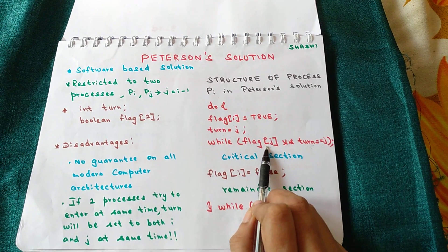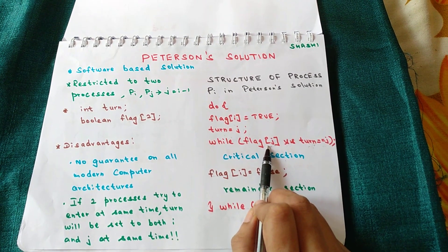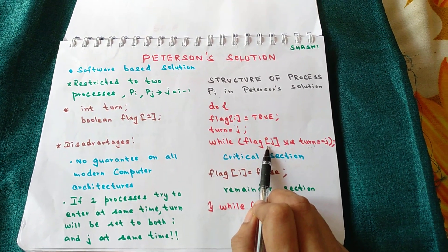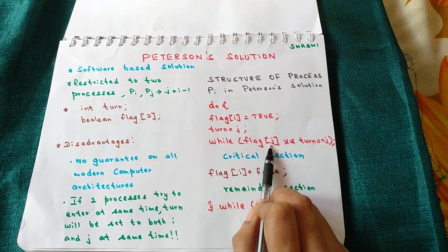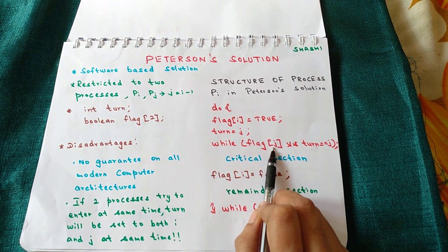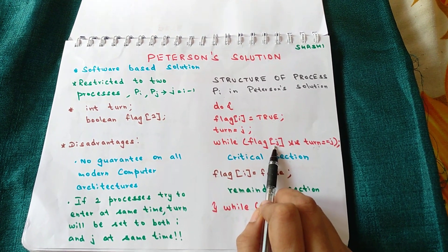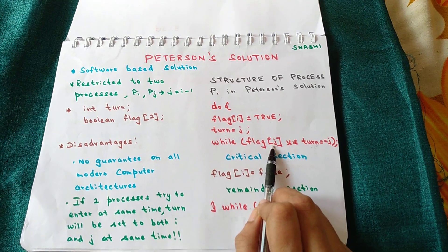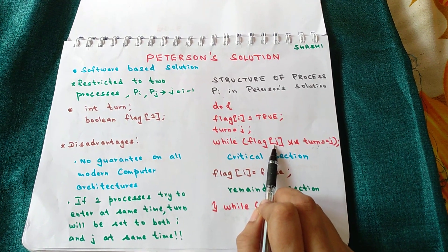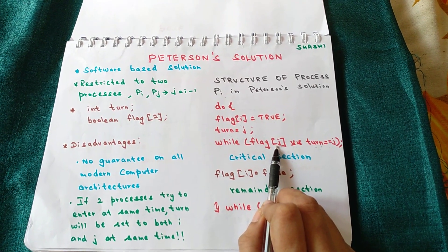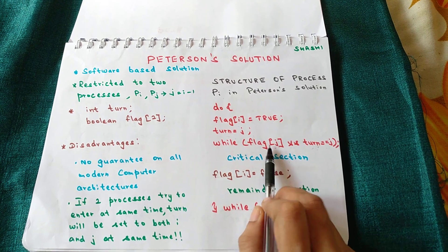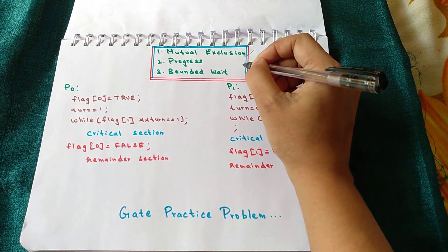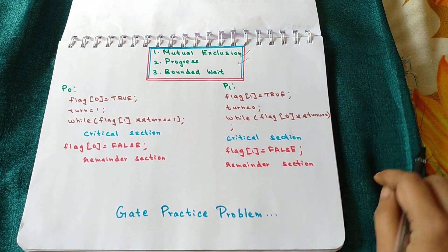By checking only the flags of interested processes, Peterson's solution ensures that the progress condition is satisfied. Uninterested processes are not involved in the decision-making, so the requirement of progress is met.